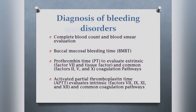To diagnose the bleeding disorders, we have the CBC to check for thrombocytopenia. We also have the buccal mucosal bleeding time to check the primary bleeding disorder and thrombocyte count. Then we have two important tests — PT and APTT — which help us diagnose secondary bleeding disorders. In the next slide, we are going to see how to do this test.